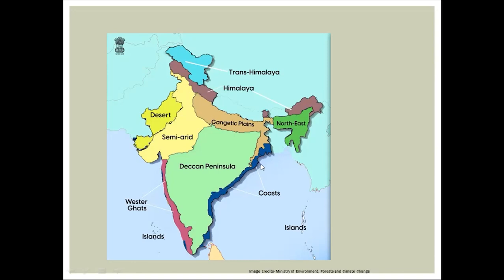The eastern coast — particularly the area in Odisha — has many turtle nesting sites. Turtle nesting also occurs on the western coast. A turtle known as the northern river terrapin, locally called Batagur baska in Sundarbans, nests on the eastern coast. It is an endangered turtle found on the eastern coast.